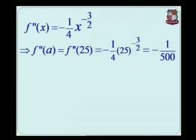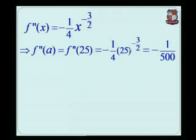We find the value of the second derivative at the point a. So f''(25) is equal to minus 1 by 4 times 25 raise to minus 3 by 2. Since 25 is 5 squared, we get 5 raised to minus 3, which is 1 upon 125. Multiplying by 4 in the denominator gives minus 1 upon 500.